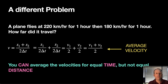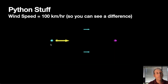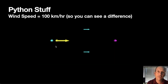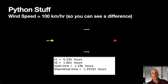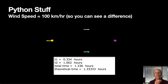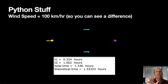Here's a Python animation I made. Here's point A, point B, and here's the wind speed. You can see the vector velocity of the plane — it goes faster on the way there and slower on the way back. Calculating the times gives a time on the way there of 0.33 hours, on the way back 1.02 hours, and you add them together to get the total time. The theoretical time uses the equation ΔT = 2S/(VP × (1 − VW²/VP²)), and it matches.